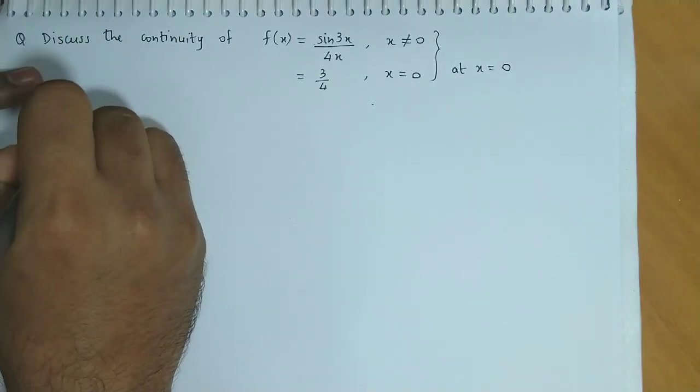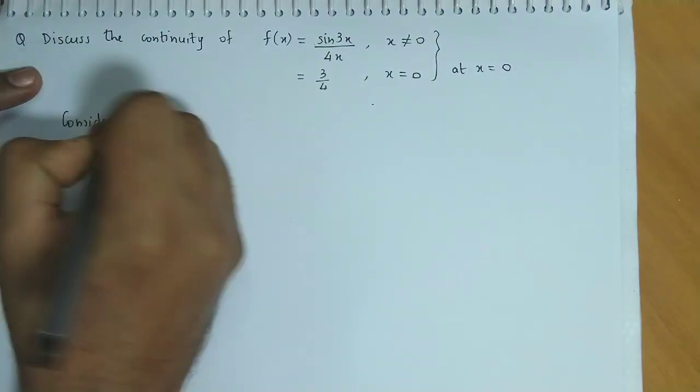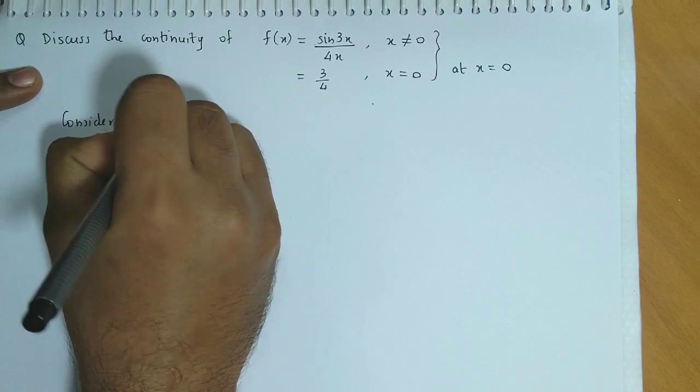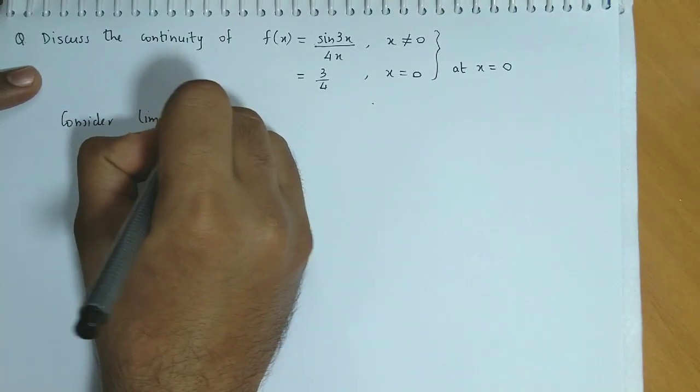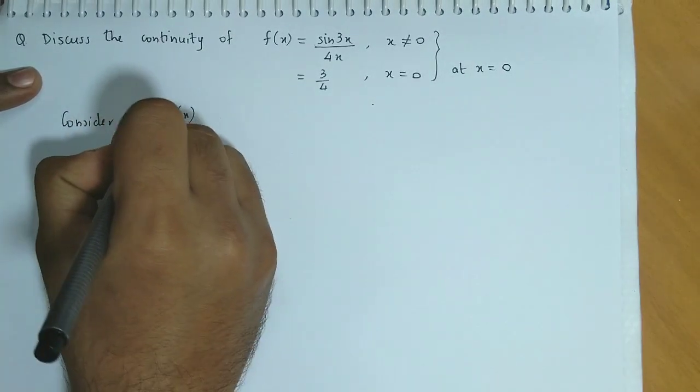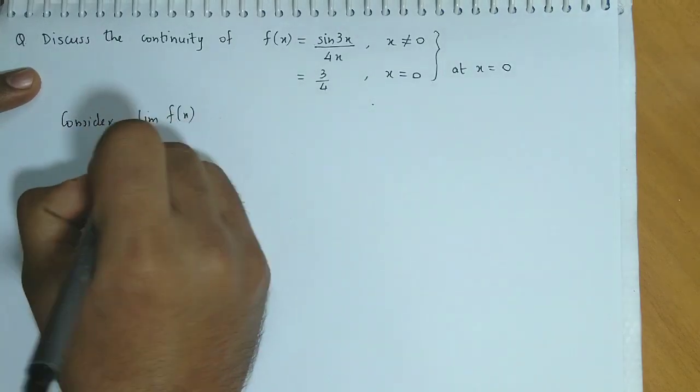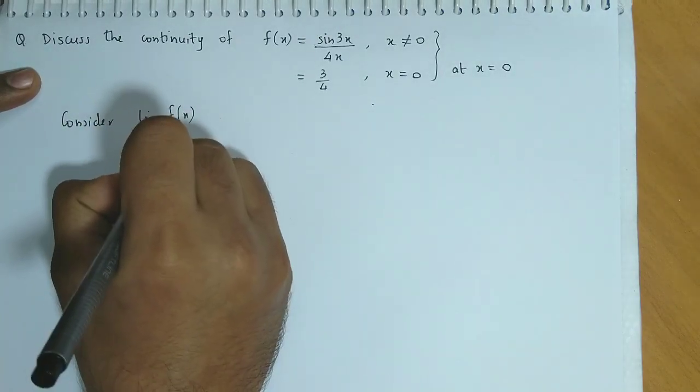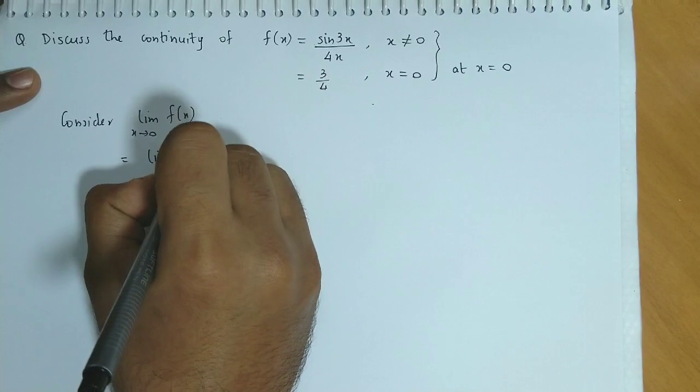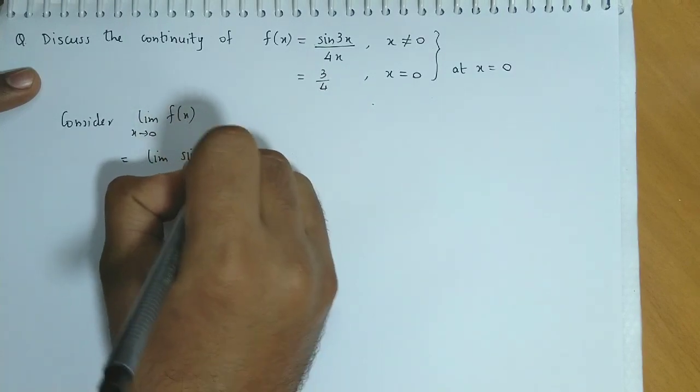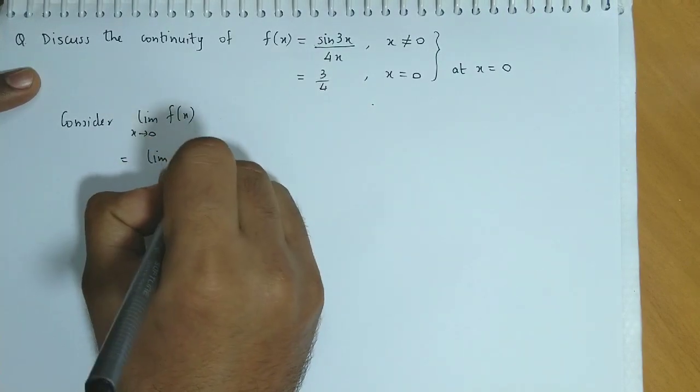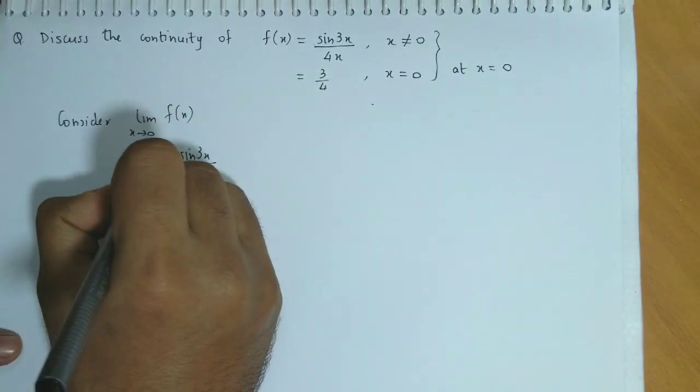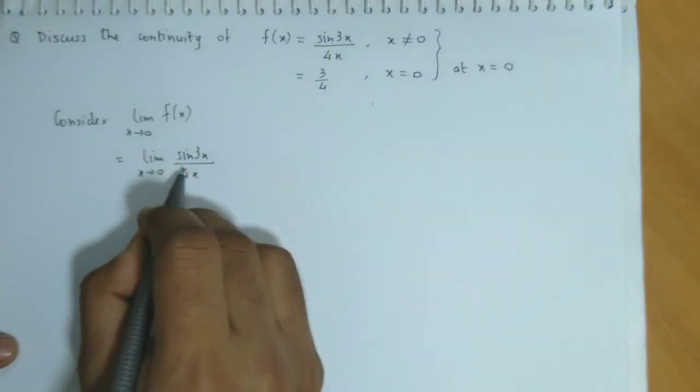So we consider limit of f(x) as x approaches 0. This would be limit of sin 3x upon 4x as x approaches 0.